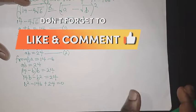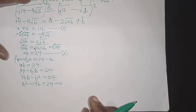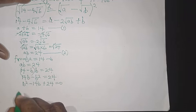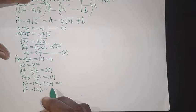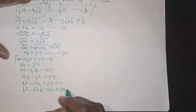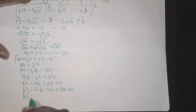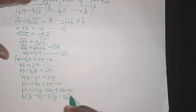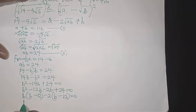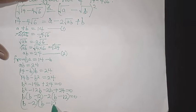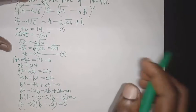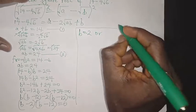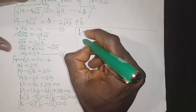To factorise this quadratic, the two numbers that work are minus 12 and minus 2: minus 12 times minus 2 is plus 24, and minus 12 plus minus 2 is minus 14. So b squared minus 12b minus 2b plus 24 equals 0, which factorises as b minus 2 times b minus 12 equals 0, giving b equals 2 or b equals 12.